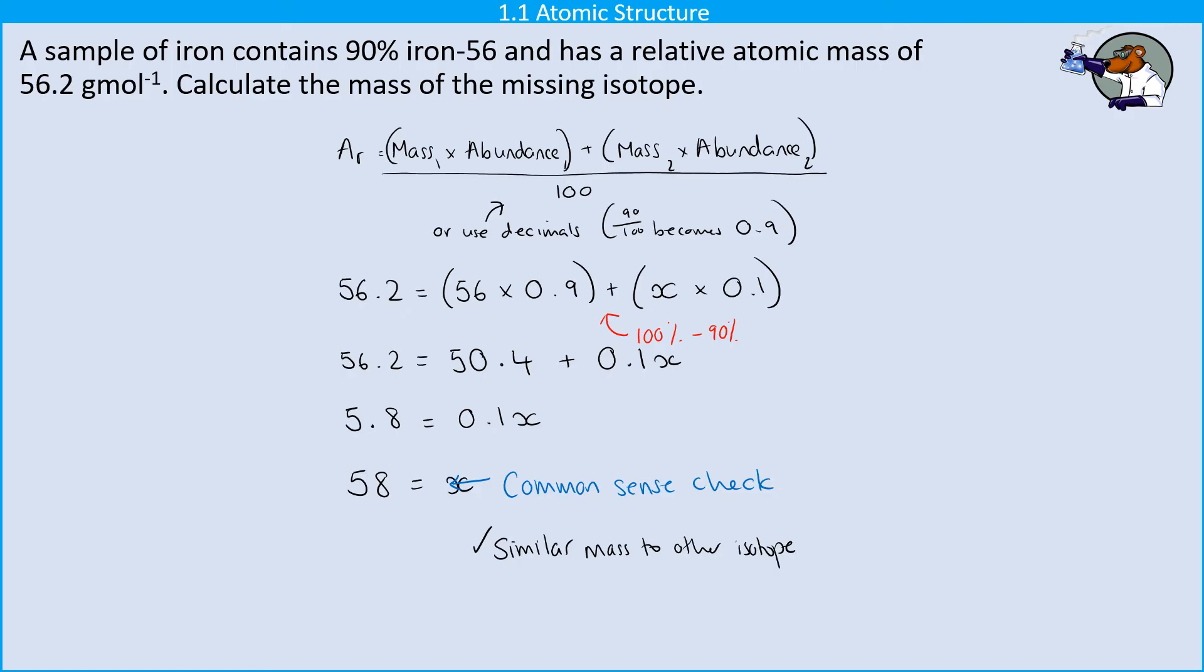The other thing is that I already have iron 56 and I've got another isotope and that's led me to have a relative atomic mass that is bigger than 56 so I know that the new isotope that I'm just finding out the mass of must be heavier than 56 so in this instance 58 is bigger than 56 so we're on to a good thing there.